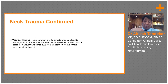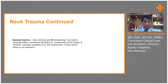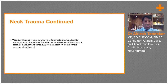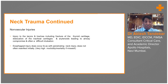If the jugular vein bleeds, it can bleed massively. If the carotid artery is injured, it can lead to death, and even direct compression may not help — surgical intervention is very, very important. This patient should be taken to the operating room and treated surgically. Apart from vascular injuries, there can be laryngeal injury or tracheal injury, both of which pose an airway threat.